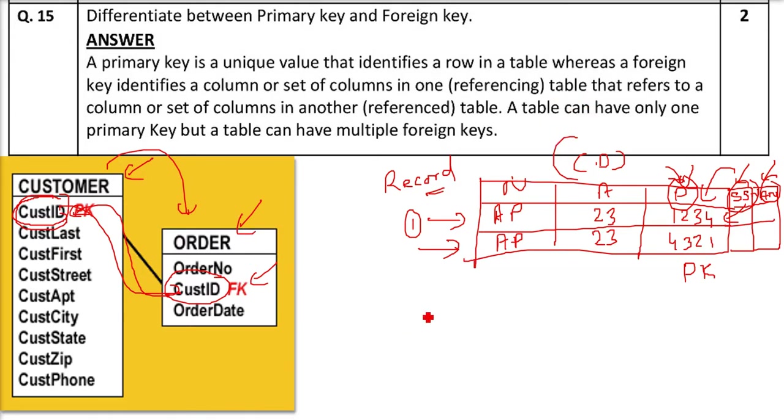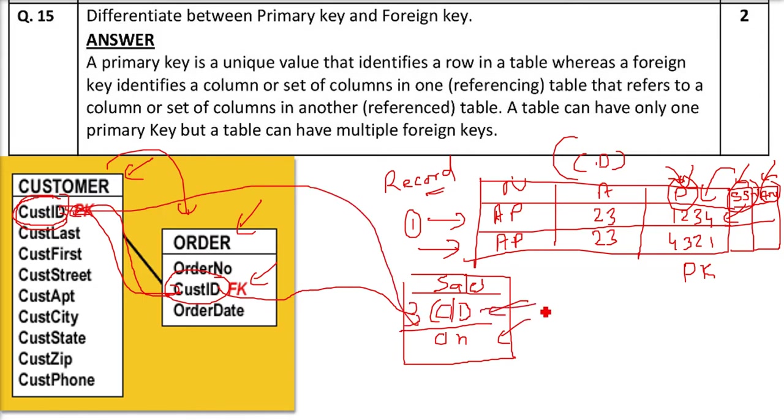So this, say we have customer ID, order number, one more table I am making. Customer ID, order number, they both can be taken as a primary key. So these are candidate key, one of them we will take. Say it is sales. So now this customer ID is found here also, this is CID, this is customer ID. So if customer ID is here, it is found here also, so this will be foreign key.